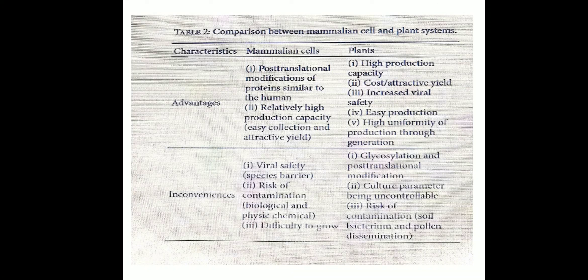Crops used commercially and at industrial level for the production of monoclonal antibodies include potato, soybean, alfalfa, rice, wheat, and tobacco. Current research aims to produce monoclonal antibodies in fruits so that developing countries can have those fruits as immune boosters. These trials are still in progress.